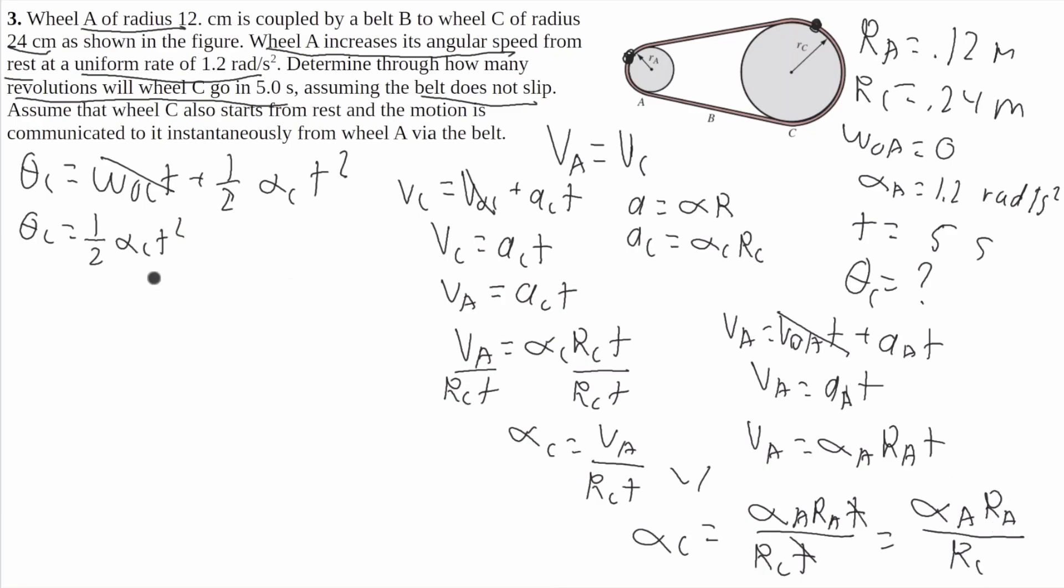I'm going to plug it into here, so we'll get theta C equals one-half times alpha A R A over R C times T squared. So we'll get theta C equals alpha A R A times T squared all over 2 R C.